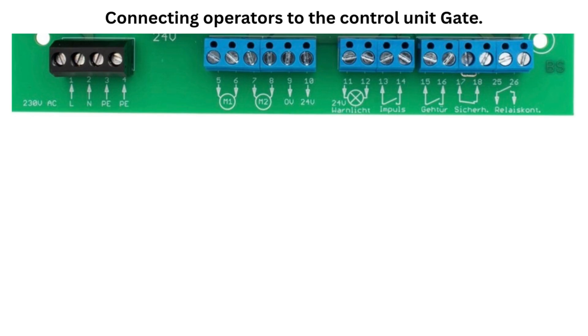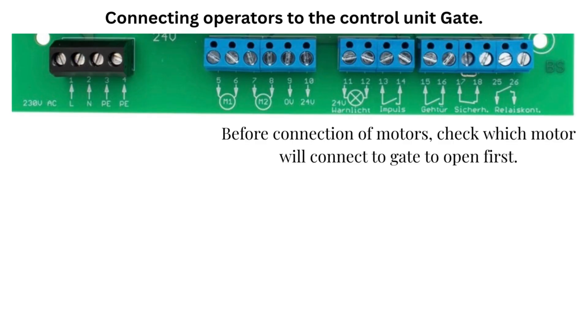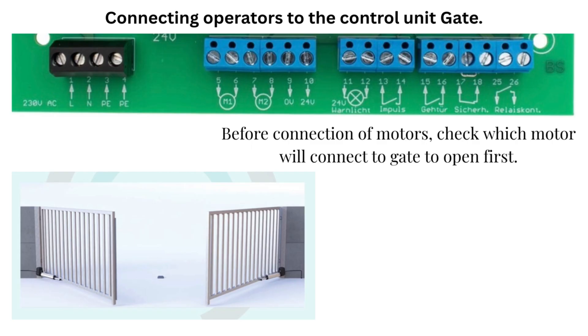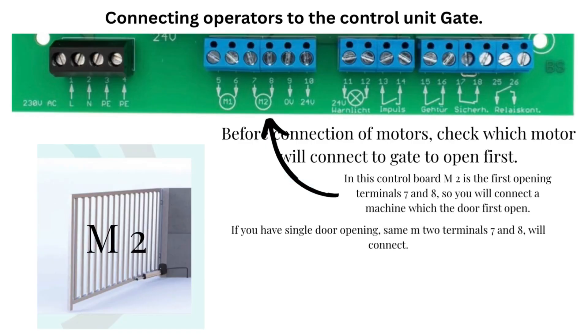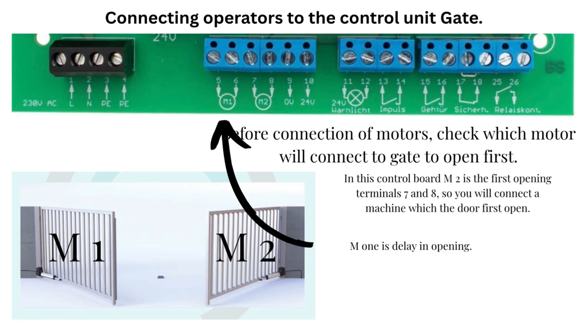Connecting operators to the control unit gate. Before connection of motors, check which motor will connect to gate to open first. There are two leaves, M1 and M2. In this control board, M2 is the first opening, terminals 7 and 8, so you will connect a machine which the door first opens. If you have single door opening, same M2 terminals 7 and 8 will connect. M1 is delay in opening.